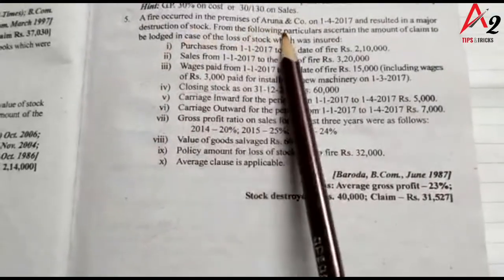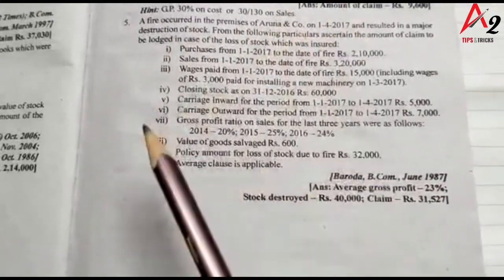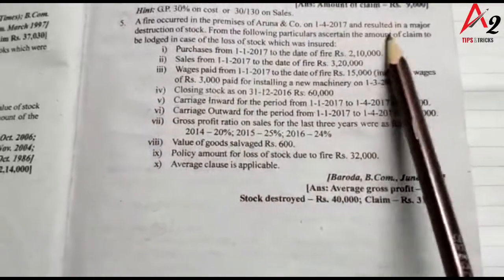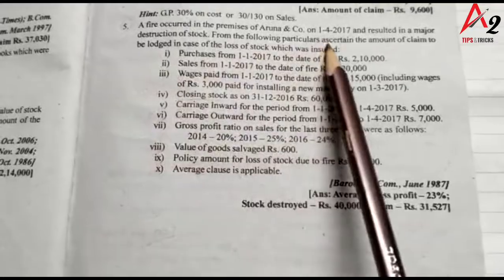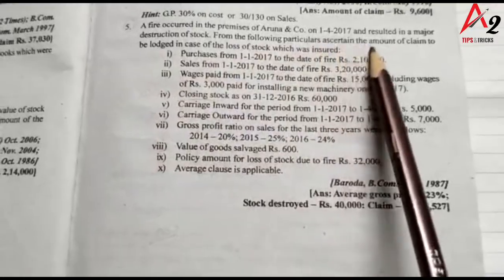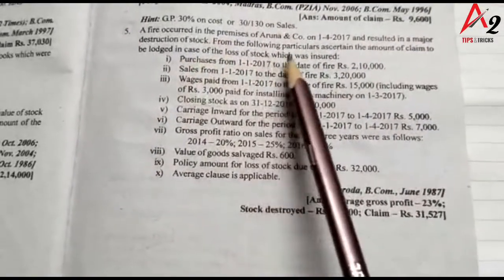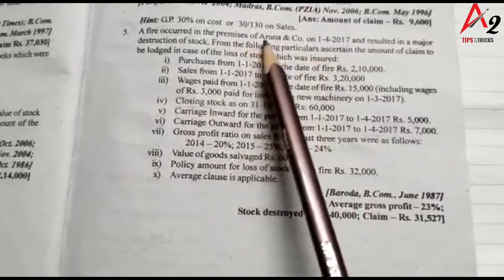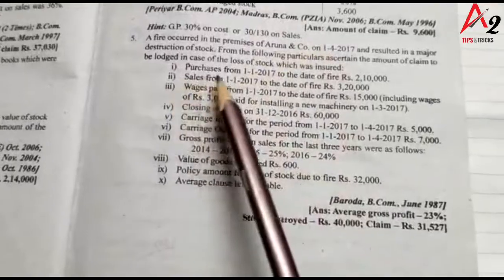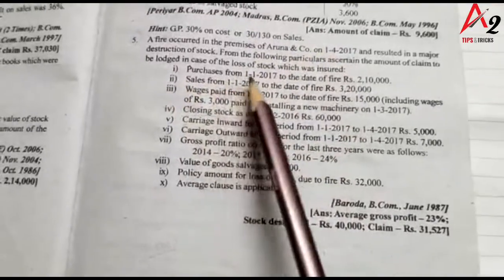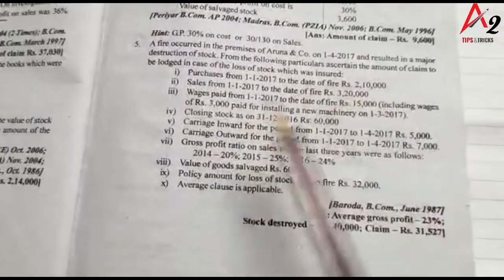A fire occurred in the premises of Aruna & Co on 1st April 2017, resulting in major destruction of stock. From the following particulars, ascertain the amount of claim to be lodged in the case of loss of stock which was insured. Opening stock of Aruna & Co on 1st April 2017 is $60,000.